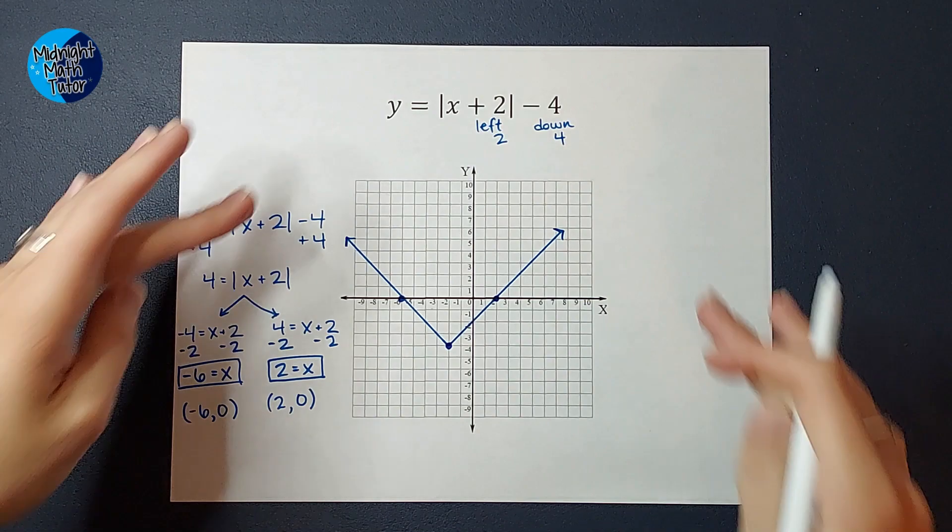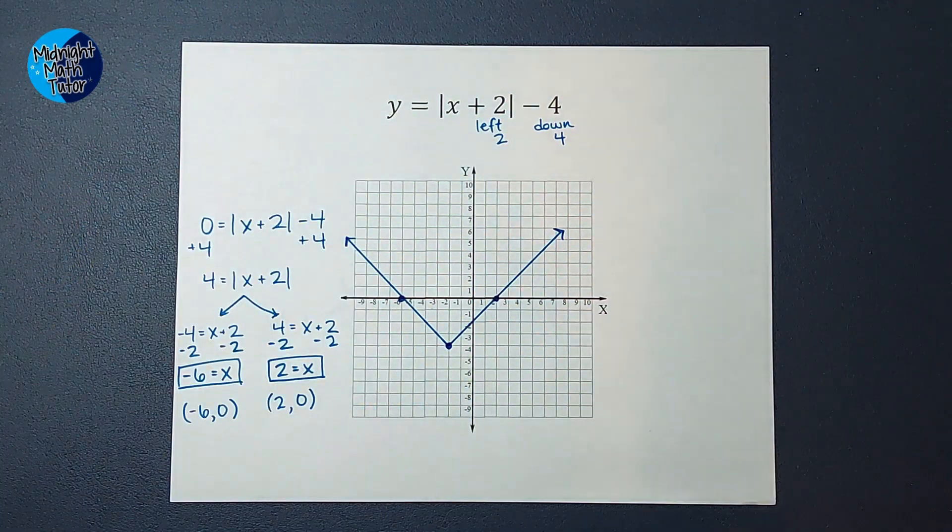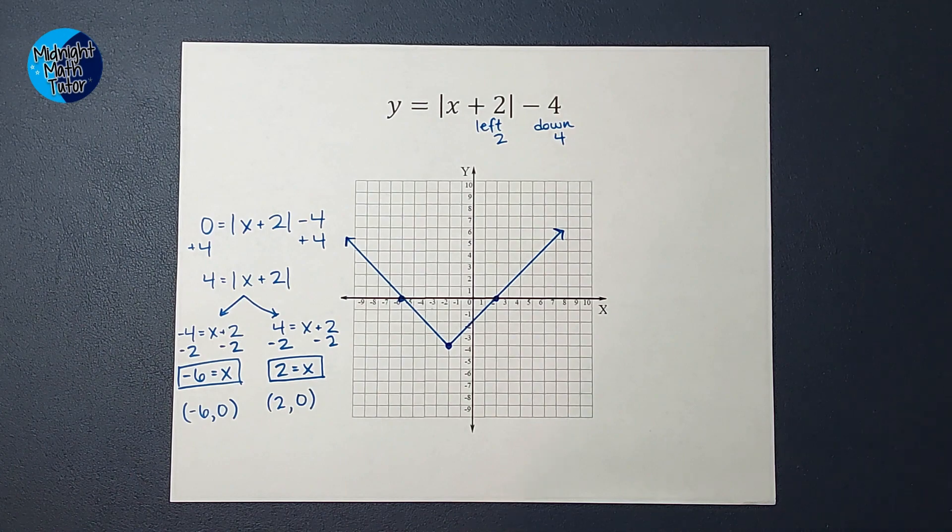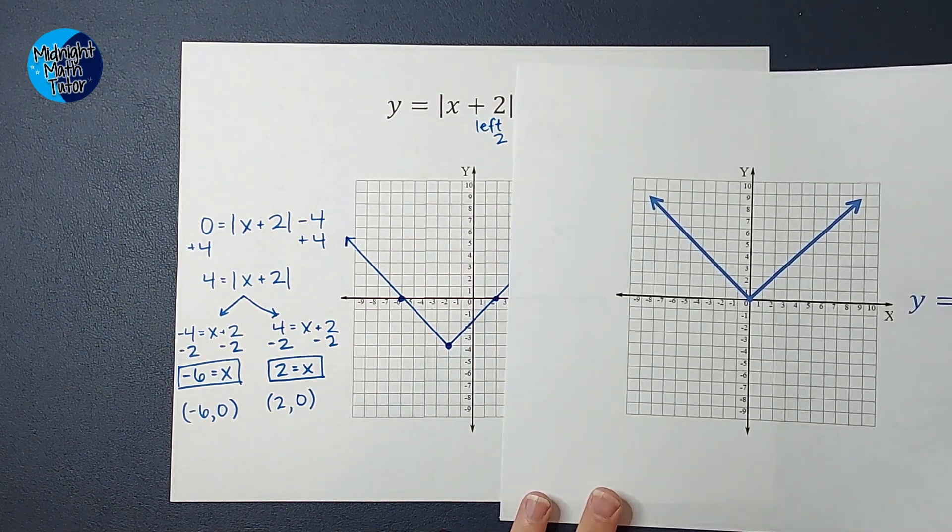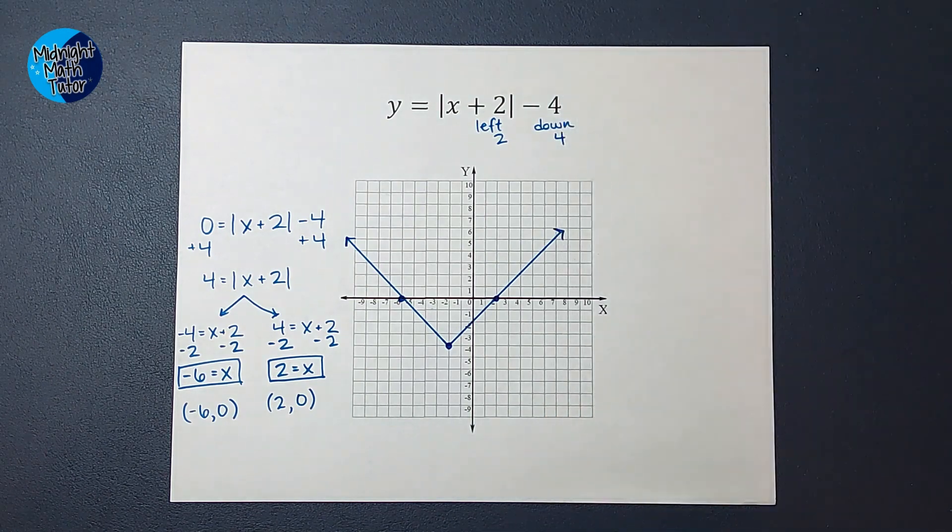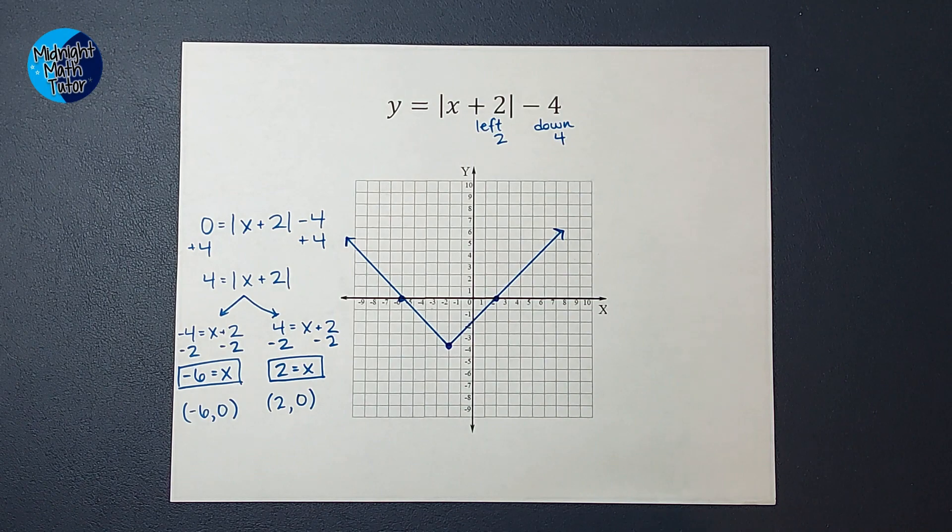I hope this made sense. We started out with our equation here. We looked at our parent graph and figured out how this one was going to differ from it. So see how it's pretty much the same graph. It's just moved over and down. All right. So hopefully this made sense. If you need some more absolute value videos, I will link a playlist for you. Thanks. Bye.